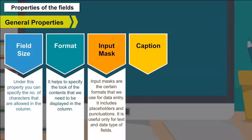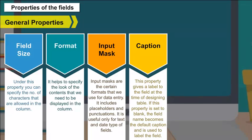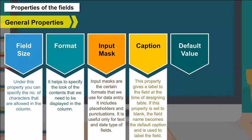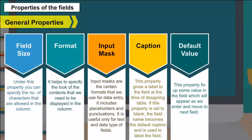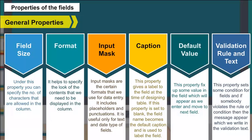Caption: This property gives a label to the field at the time of designing the table. If this property is set to blank, the field name becomes the default caption used to label the field. Default Value: This property picks up some value in the field which will appear as we enter and move to the next field. Validation Rule and Text: This property sets some condition for fields, and if somebody violates the rule, the message written in the validation text appears.